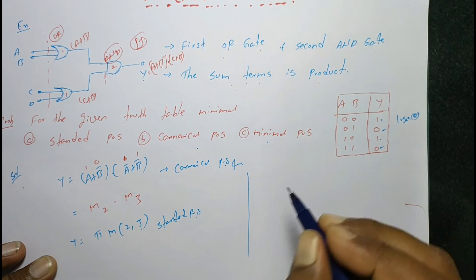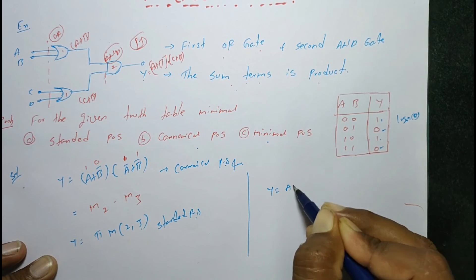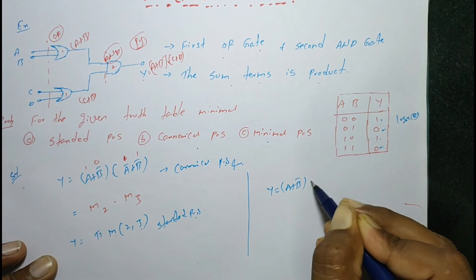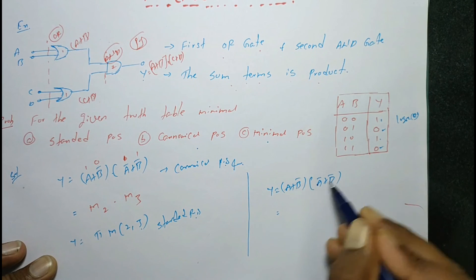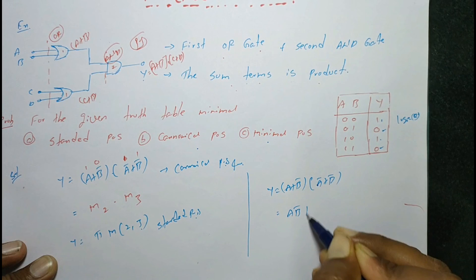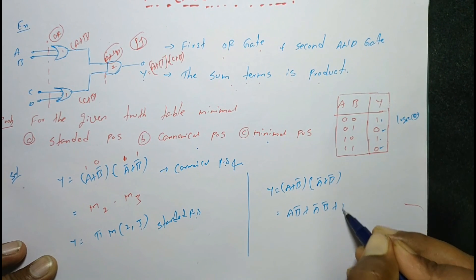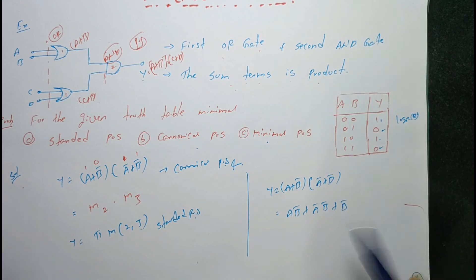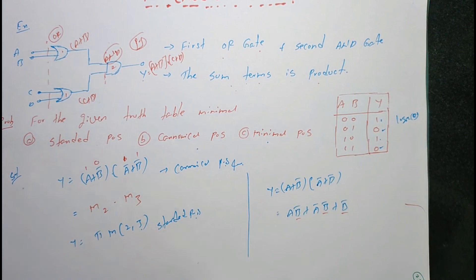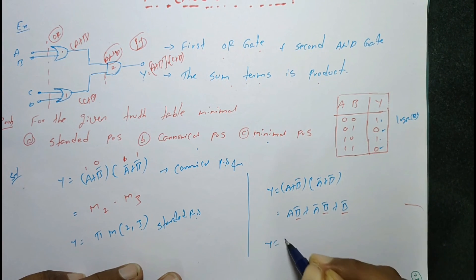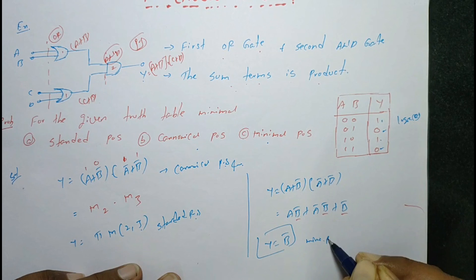The final one is the minimal POS. y equals (A + B̄)(Ā + B̄). Expanding: A·Ā + A·B̄ + Ā·B̄ + B̄·B̄ — in all three terms, B̄ is common. Therefore, the minimal POS is y equals B̄.